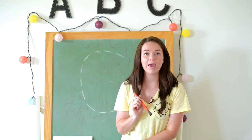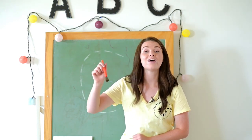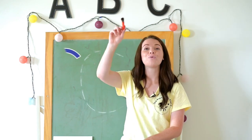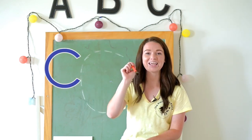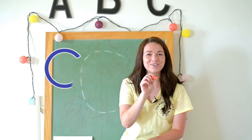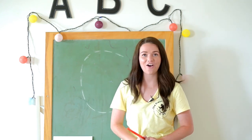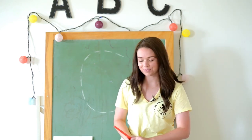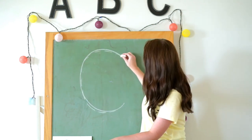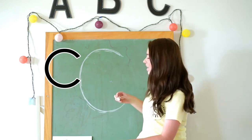I'm going to take my paintbrush and dip it in some colored paint: around, curve C. Now let's trace it on the chalkboard: around, curve C. Around, curve C. Very good.